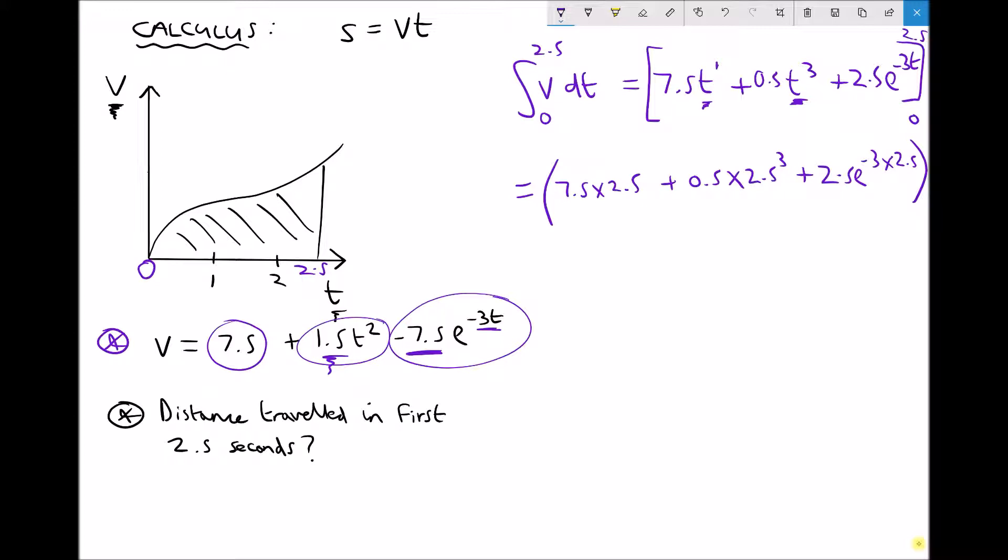And then from that, I need to subtract 7.5 times 0, which is just going to be 0, but we'll write it anyway, plus 0.5 times 0 cubed, which is also going to be 0, plus 2.5e to the minus 3 times 0. Well, minus 3 times 0 is just going to be 0, but again we'll write that out.